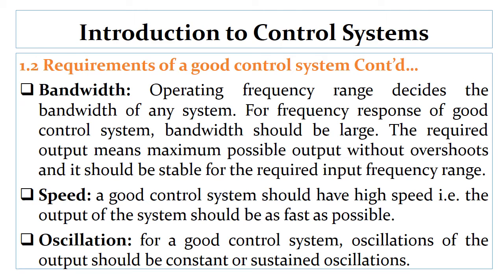Another requirement is bandwidth. The bandwidth or response time of a system is a measure of how fast it responds to a changing input command. The bandwidth of the control loop determines how quickly the system responds to changes in the parameter being controlled — position, velocity, or torque. The bandwidth is smaller than or equal to the operating frequency, and for a good control system the bandwidth should be large.